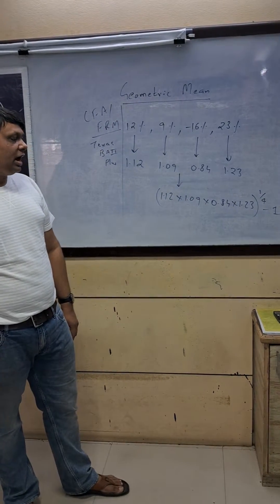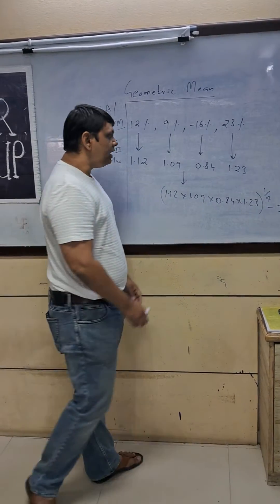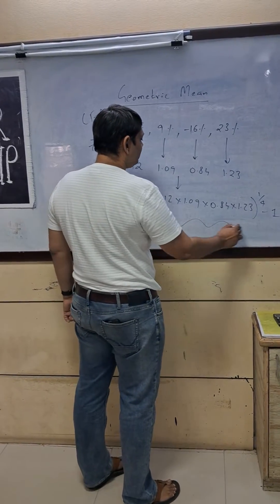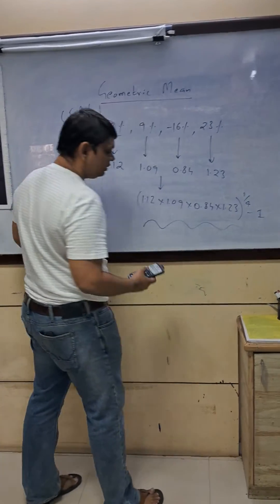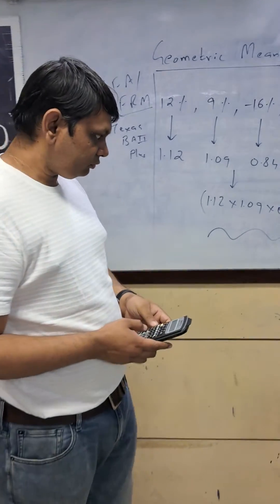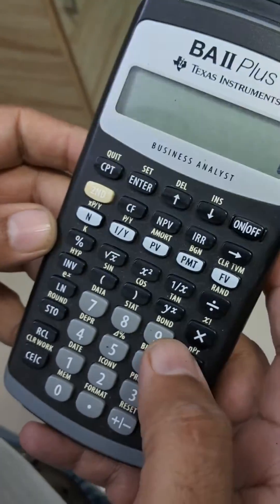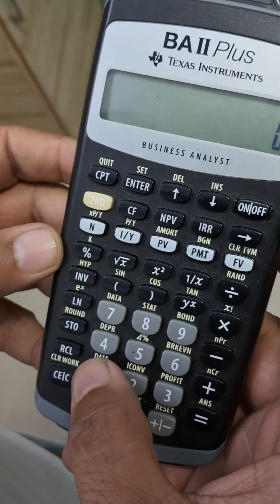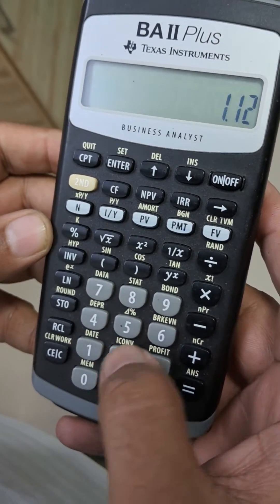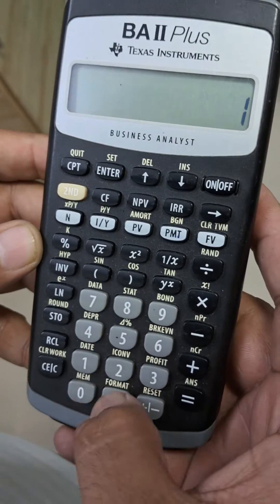You need to know how to do this calculation on the Texas BA II Plus. Let's have a look. First, perform the multiplication: 1.12 × 1.09